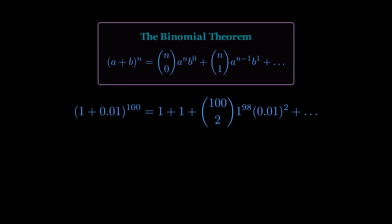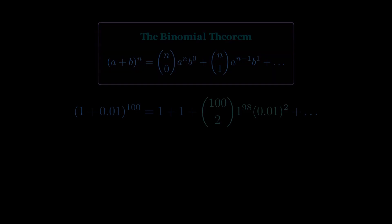But the expansion doesn't stop here. Every subsequent term in the expansion is also a positive number. Since all our base numbers are positive, there are no negative terms to cancel anything out. So, what does this all mean?